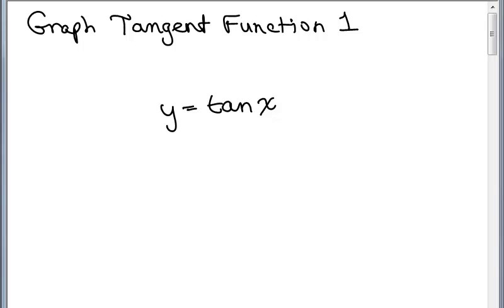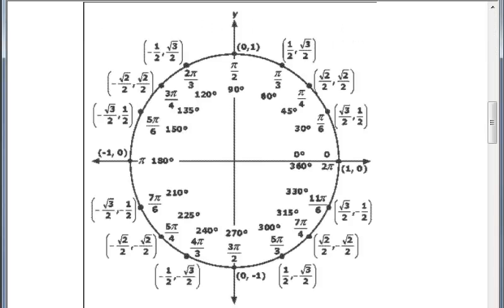And we're going to start by looking at the unit circle. So here's the unit circle where I've got angles in radians and also in degrees and those special ordered pairs here for these special angles.